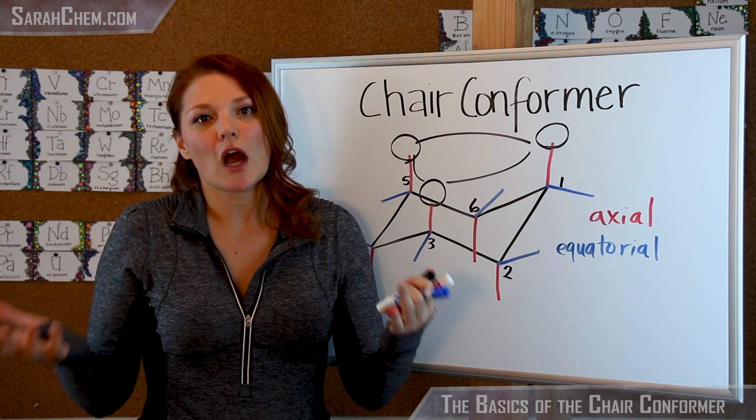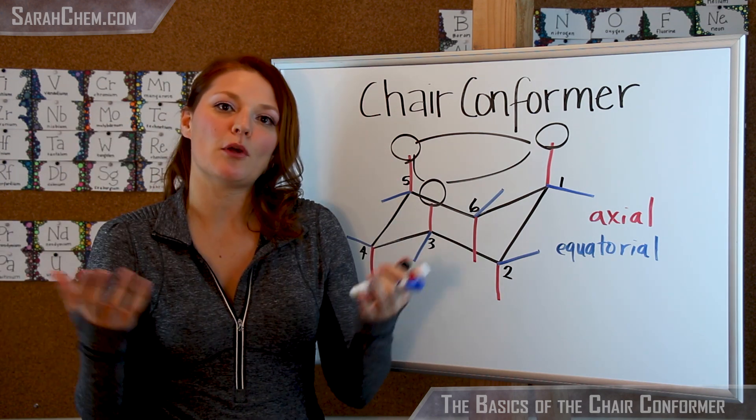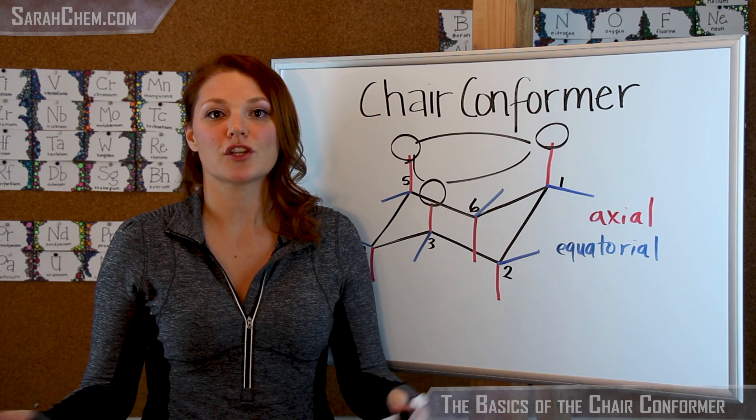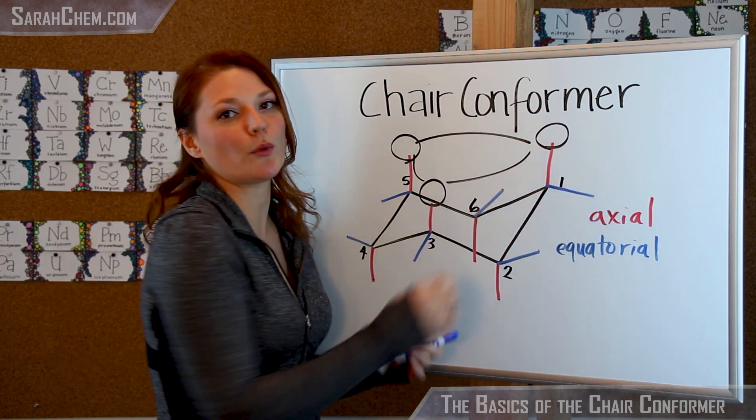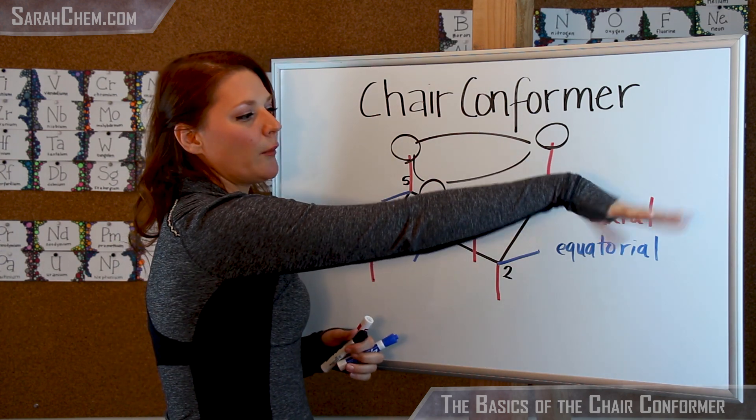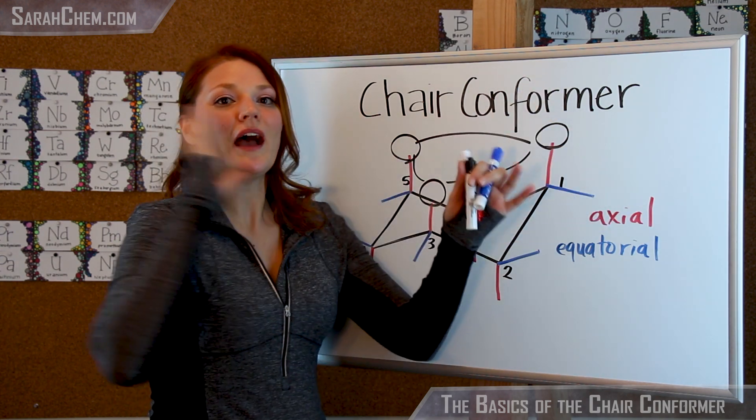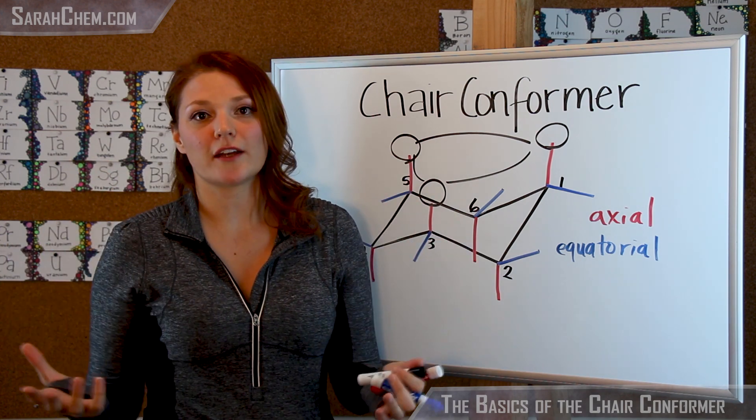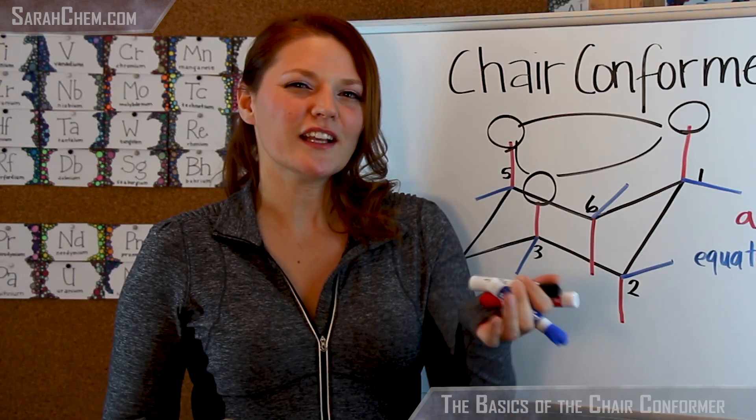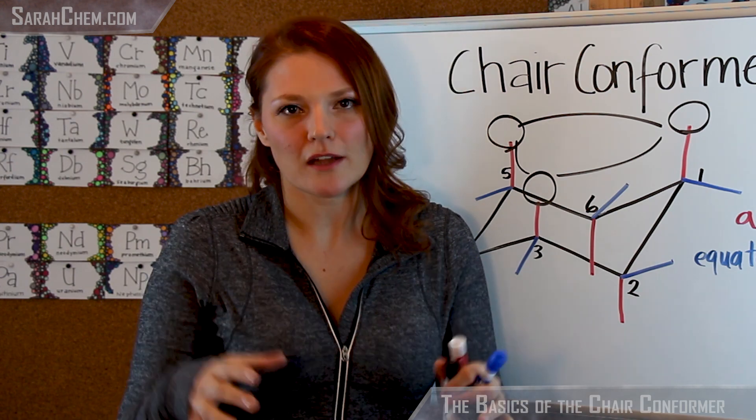So if you were given the option to draw the most stable conformer of a particular compound, you would choose to put a big, bulky substituent into an equatorial position. Because in that equatorial position, it has more room, and there's a lot less of that repulsive interaction happening between electron clouds. So now, let's take a look at how we'd actually look at that in the context of a question.